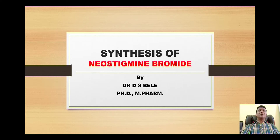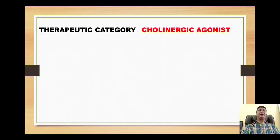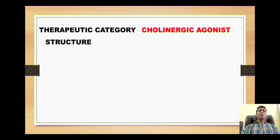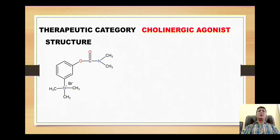Our today's topic is synthesis of neostigmine bromide. This compound belongs to the therapeutic category of cholinergic agonists, meaning this drug mimics the action of the neurotransmitter acetylcholine. Now look at the structure of neostigmine bromide.